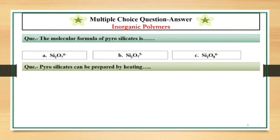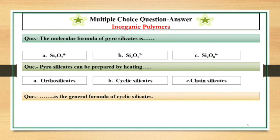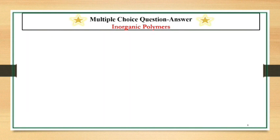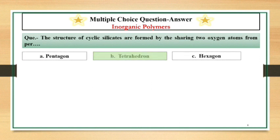Pyrosilicates can be prepared by heating Orthosilicates. Dash dash is the general formula of Cyclic silicates. SiO3N 2N-. The structures of cyclic silicates are formed by sharing two oxygen atoms per tetrahedron.